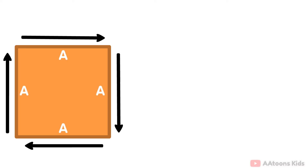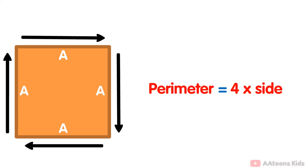Perimeter: the perimeter of a square is calculated by 4 times its side length. Perimeter of a square equals 4 multiplied by side length.